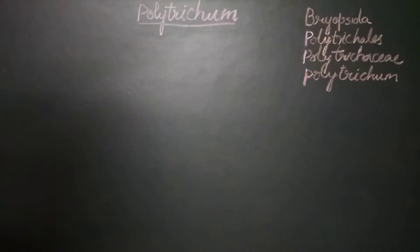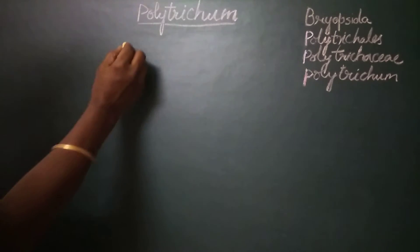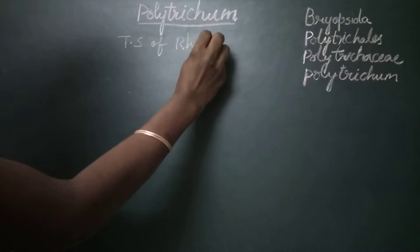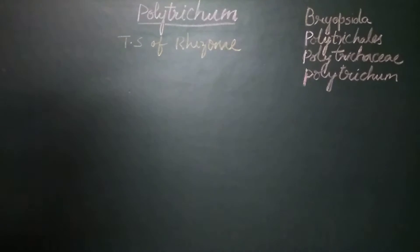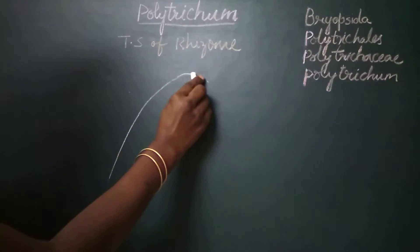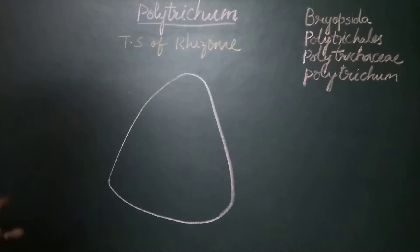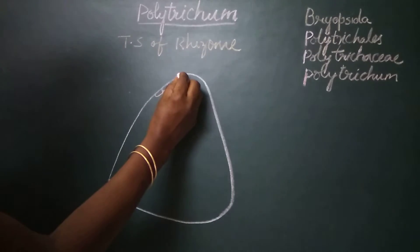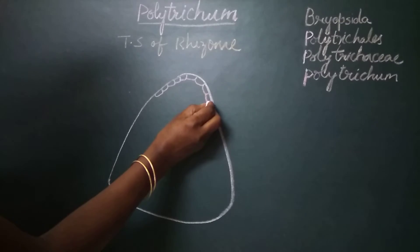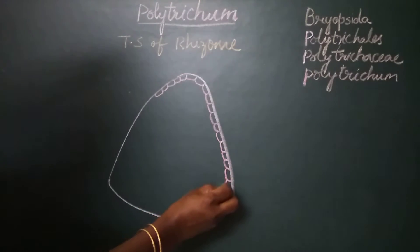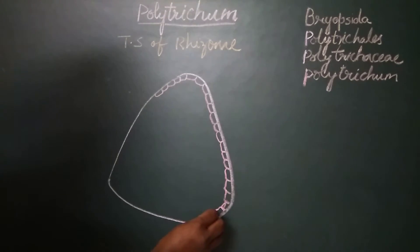Let us see the internal structure of the rhizome of Polytrichum. This we can study well under the transverse section. The transverse section of the rhizome of Polytrichum is roughly triangular in its outline and shows the outermost layer, which is the epidermis. The epidermis is made up of small rectangular cells which have thick walls.